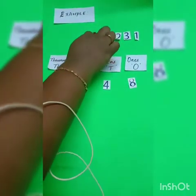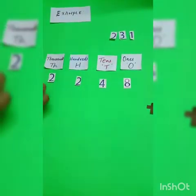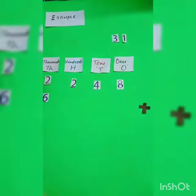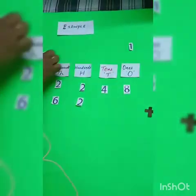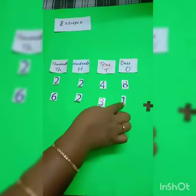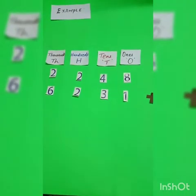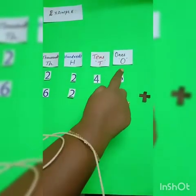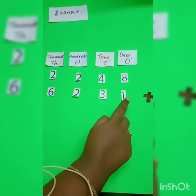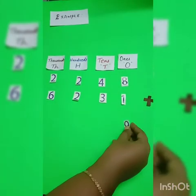2248 added with 6231. We always start by adding from the ones column. We add 8 plus 1 to get 9.